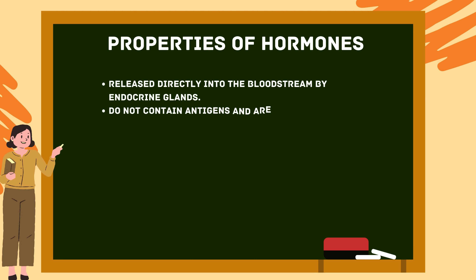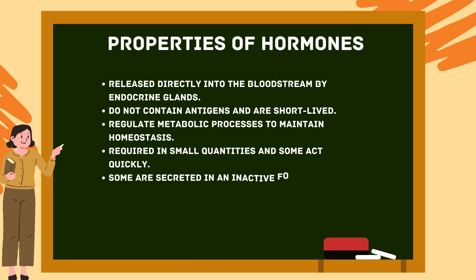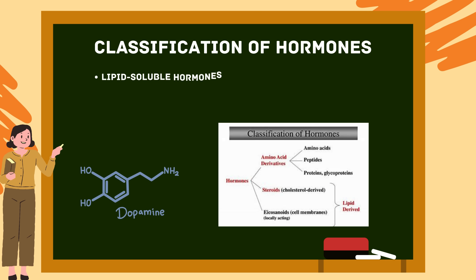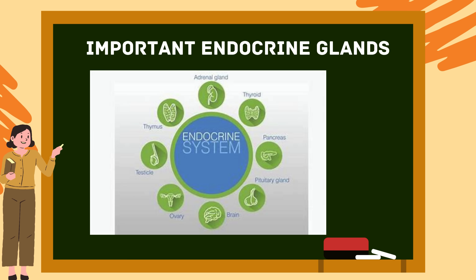Properties of hormones: released directly into the bloodstream by endocrine glands; do not contain antigens and are short-lived; regulate metabolic processes to maintain homeostasis; required in small quantities; some act quickly; some are secreted in an inactive form, for example proinsulin; target specific organs. Classification of hormones: lipid-soluble hormones include steroid and thyroid hormones; water-soluble hormones include peptide, protein, and amine hormones.